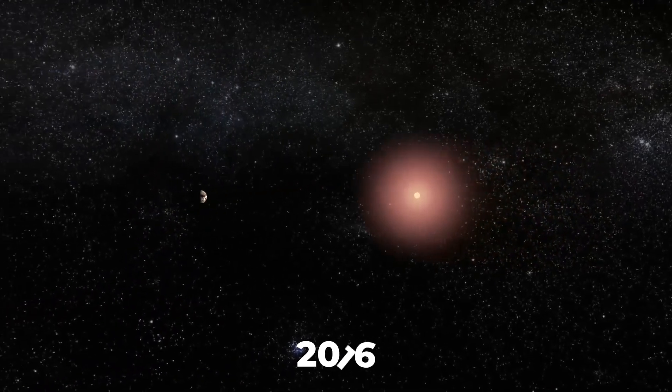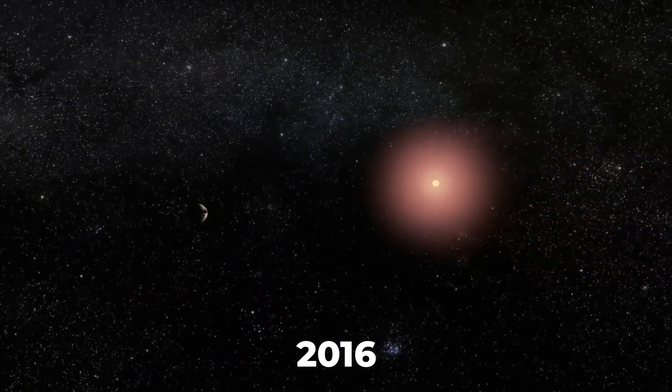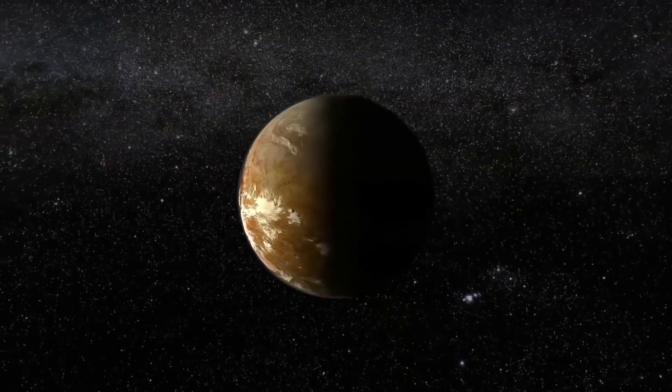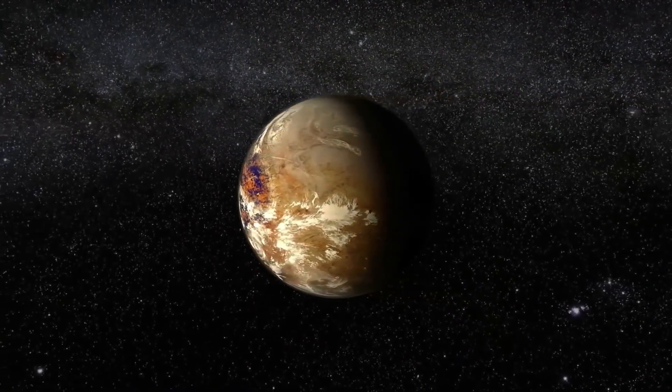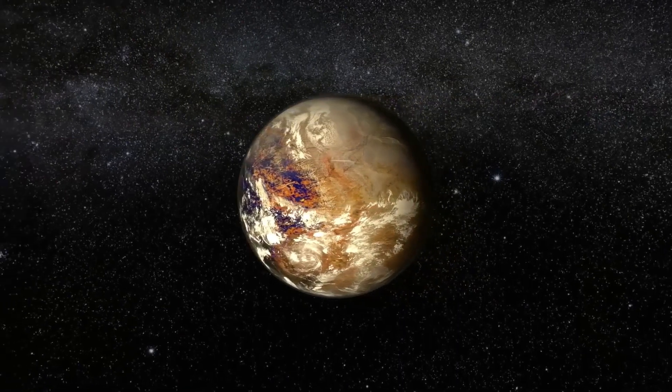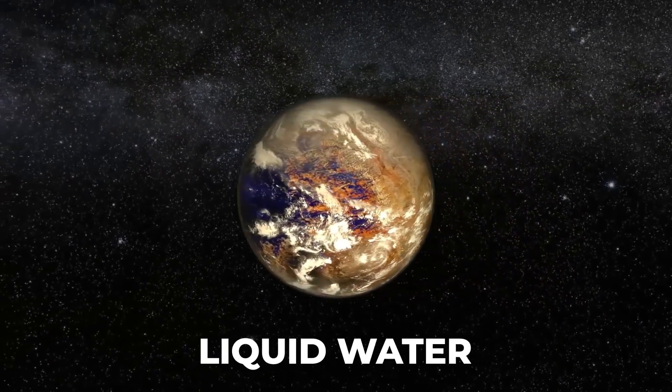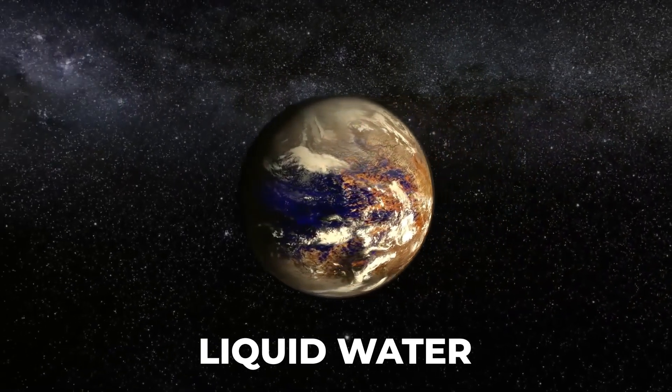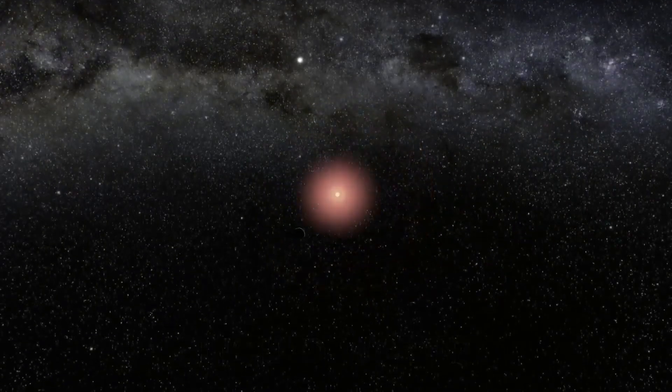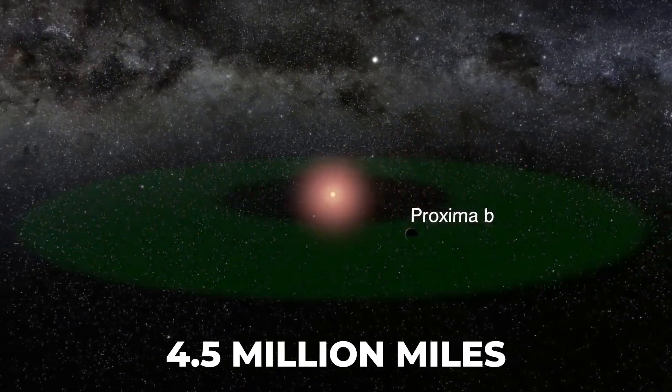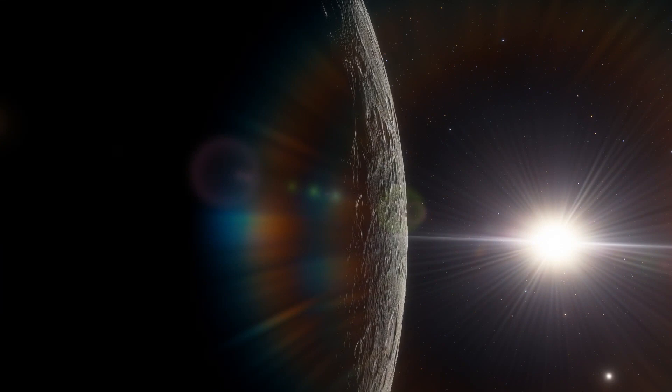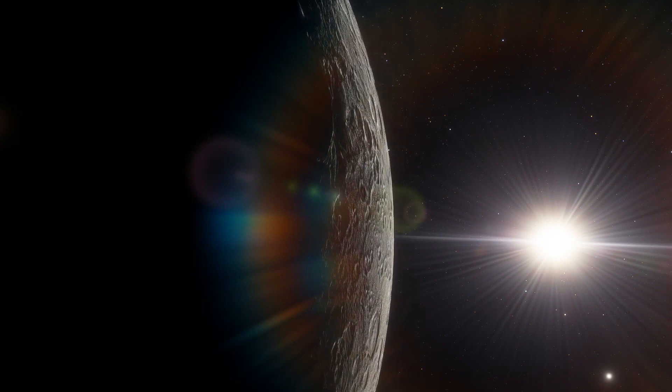It exists in the habitable zone of its star, meaning it is just in the right spot to have liquid water on its surface, increasing its potential to host life. Proxima b orbits just 4.5 million miles out, or about a tenth the distance Mercury is from the Sun at its closest point.